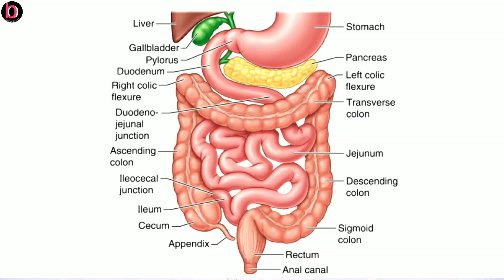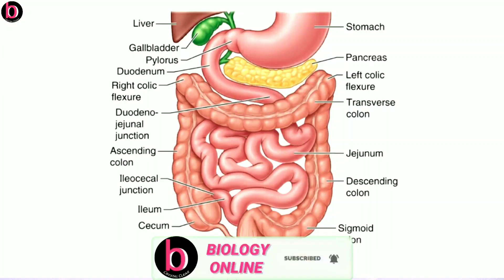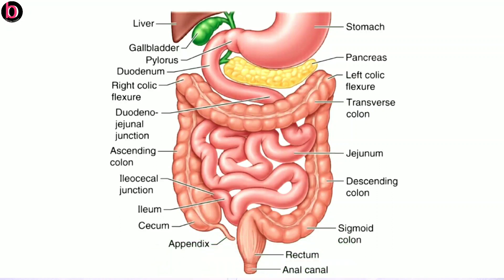The small intestine is the longest part of the alimentary canal; its length is nearly six and a half meters. The total length of the alimentary canal is nearly six to nine meters, which is variable with respect to the height of the individual. When we compare small and large intestine, the small intestine is about six and a half meters while the large intestine is nearly 1.5 meters. However, the naming is not based on length but on width or diameter — the diameter of the small intestine is nearly 3 to 4 cm while the large intestine is nearly 4 to 6 cm.